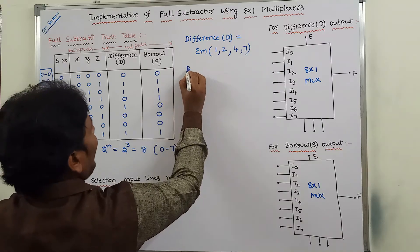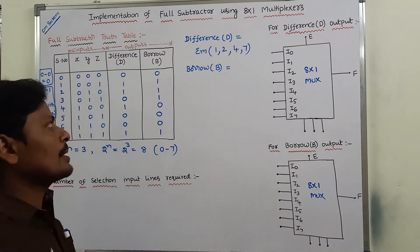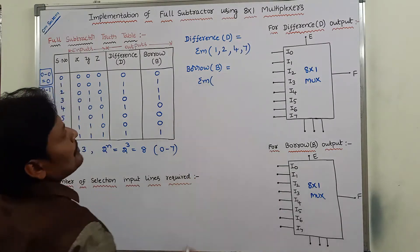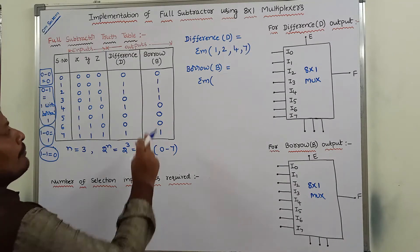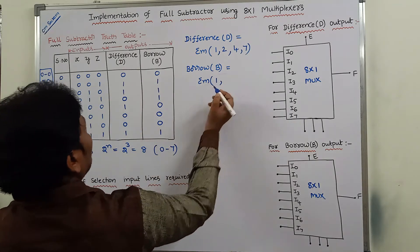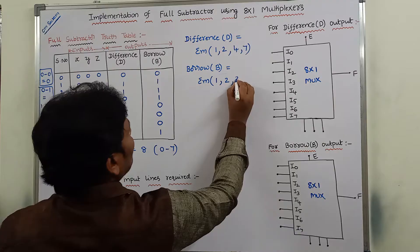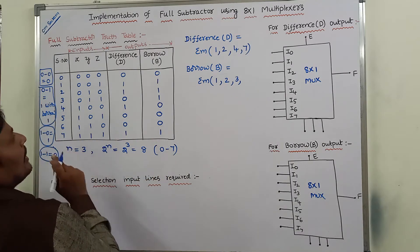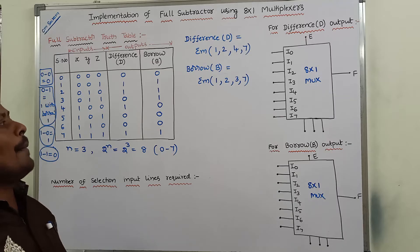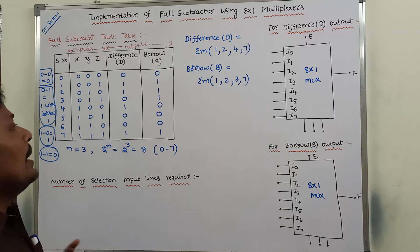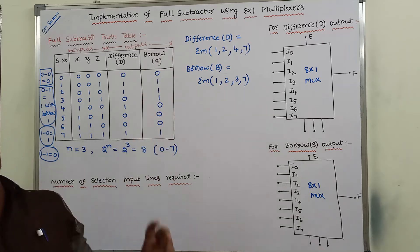Next, we have to write the borrow output, which can also be represented in terms of minterms — sigma m of certain values. To write the minterms, we identify the borrow column and where the 1s are present. Here 1 is there, the corresponding minterm number is 1. Next, minterm number is 2. Next, minterm number is 3. Next, minterm number is 7. So once we have written the difference output and borrow output in terms of minterms, we can go for how to represent this full subtractor using 8 by 1 multiplexer.